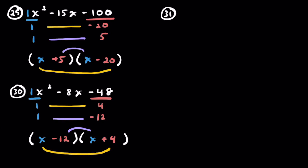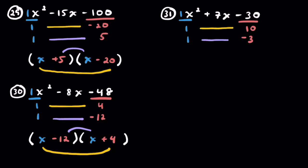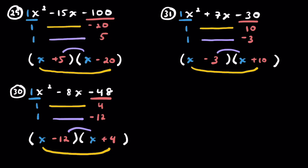Problem 31: x squared plus 7x minus 30. Switching it up — every 10 problems or so I'm changing the pattern. For negative 30 with a positive b term, it's one positive and one negative, 7 apart. Let's go with 10 and 3. Since we need positive 7x, the smaller number gets the negative. So positive 10 and negative 3, giving (x + 10)(x − 3).